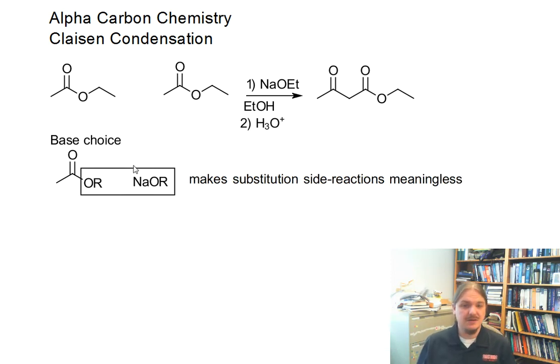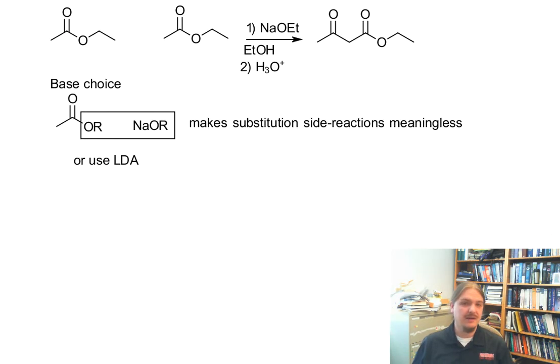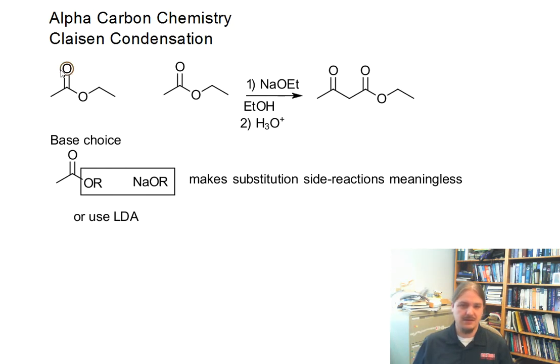Remember that esters are electrophiles that undergo substitution reactions. Alkoxide anions are nucleophiles. If we used hydroxide, for example, we would also be hydrolyzing esters as this reaction went on, and we don't want to do that. If I used a different alkoxide, I'd be transesterifying esters left and right. The other alternative is to use a much stronger base like lithium diisopropyl amide, and we'll talk about that as an approach in the crossed Claisen video.